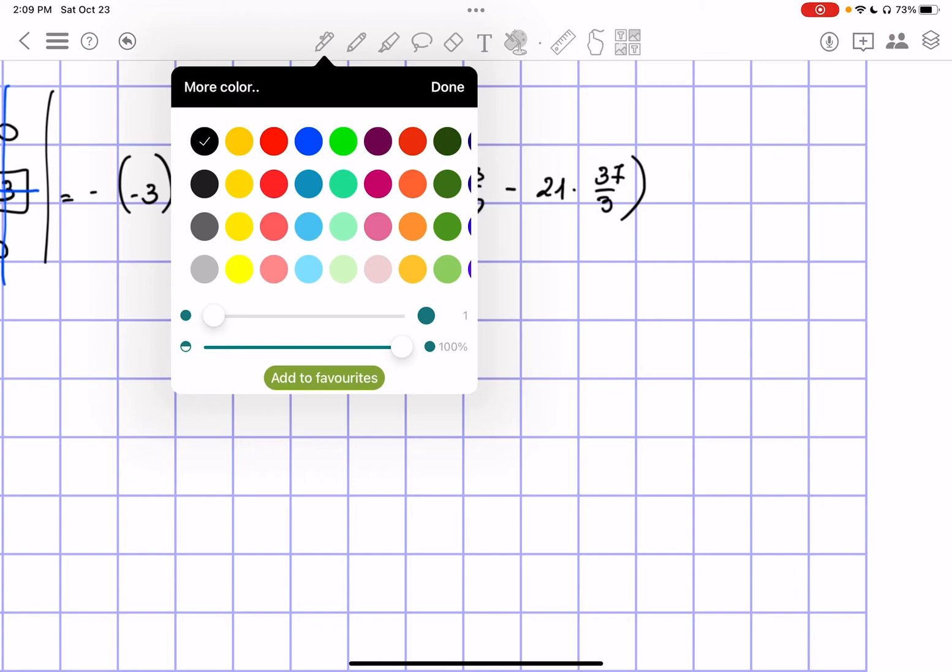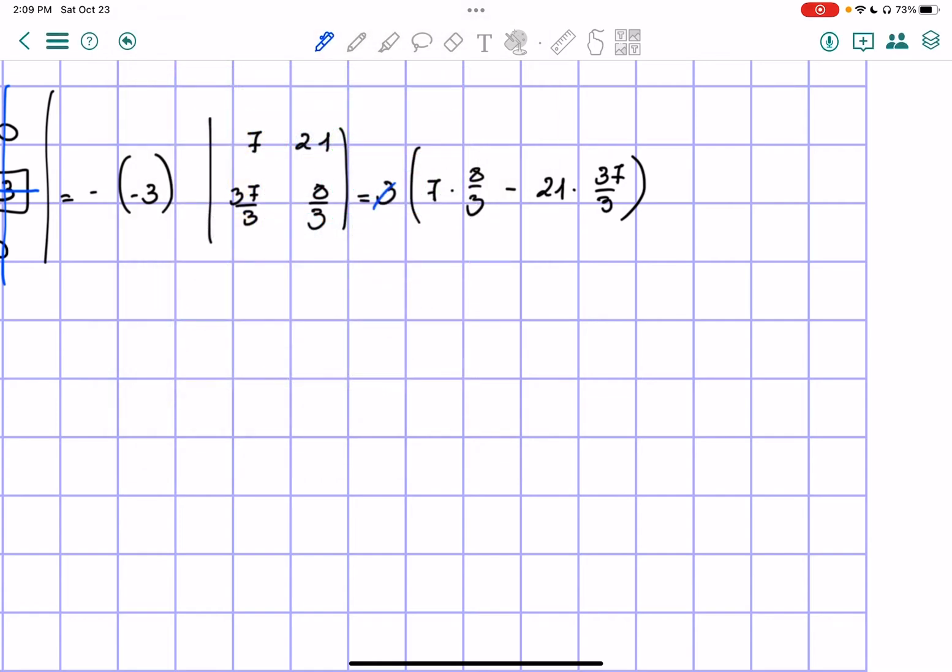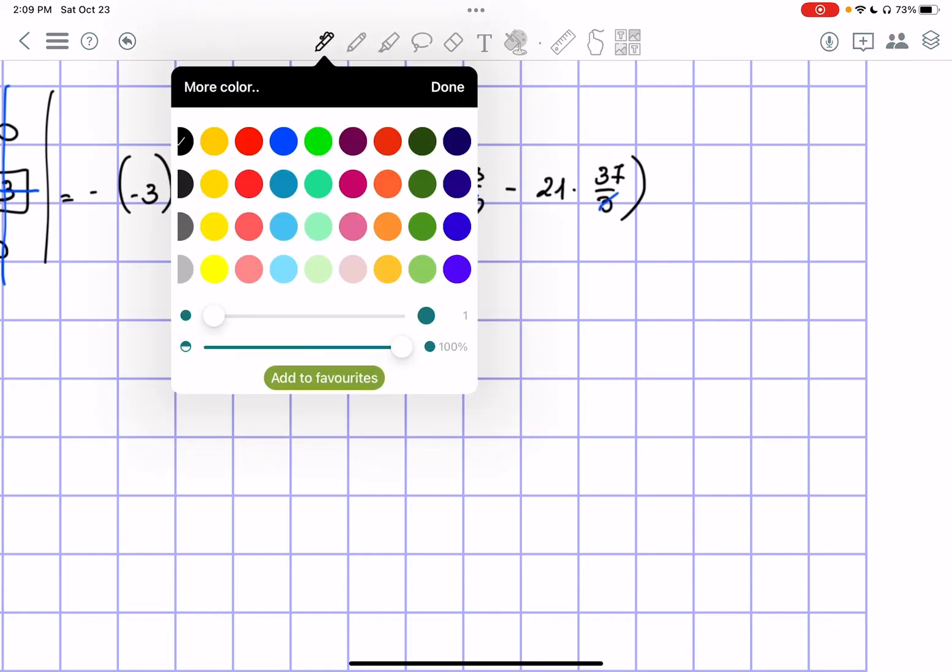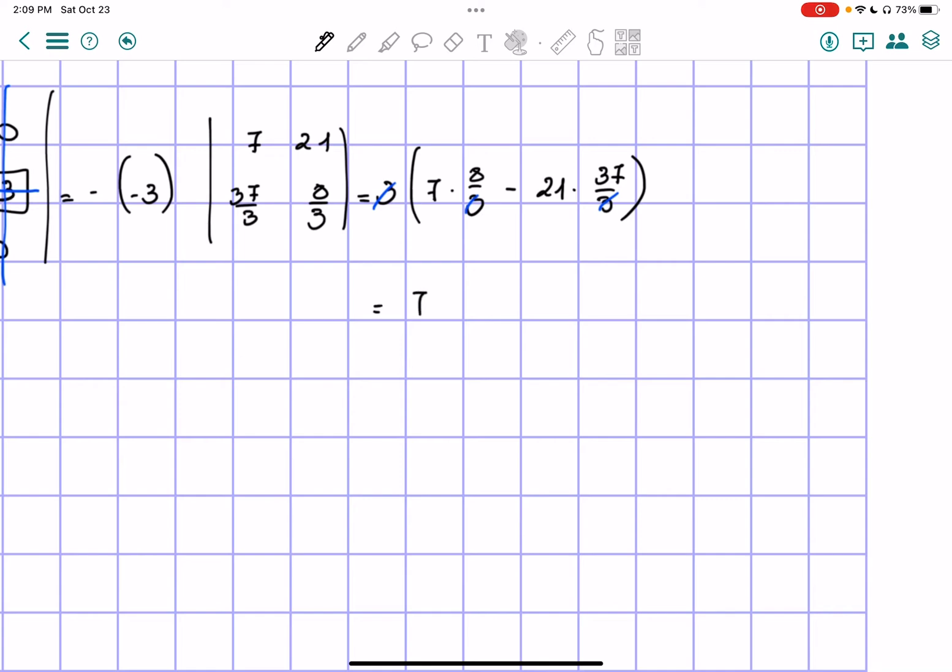So we can actually get rid of everything using the 3 outside and we get simply 7 times 8 minus 21 times 37. So we have 7 times 8 which is 56 and then 21 times 37 which is 777.